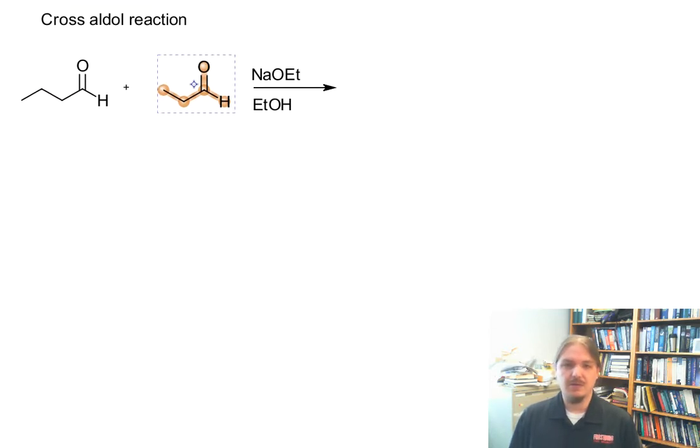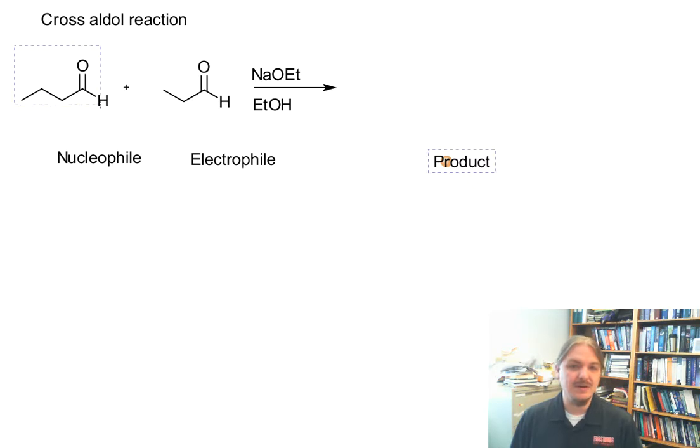So what happens here is that we have two different aldehydes. Either one could be the nucleophile and either one could be the electrophile. You're going to get a different product out of each possible combination. So to demonstrate how this works, let's walk through all four possible combinations.